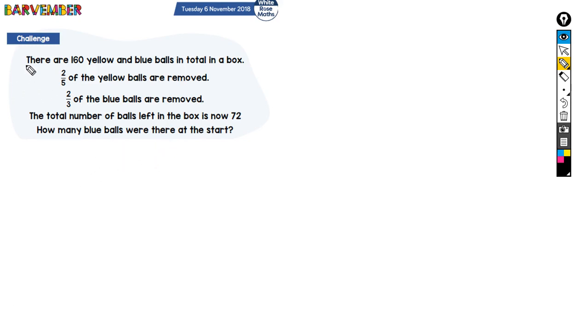Okay, let's have a look. There are 160 yellow and blue balls in total in a box. Two-fifths of the yellow balls are removed, and two-thirds of the blue balls are removed. The total number of balls left in the box now is 72, and we're asked how many blue balls there were at the start.